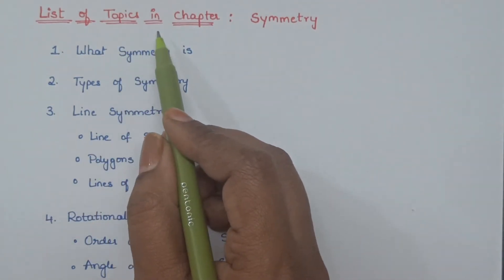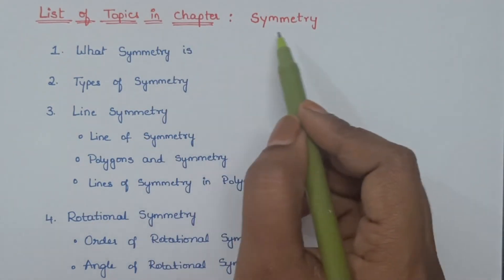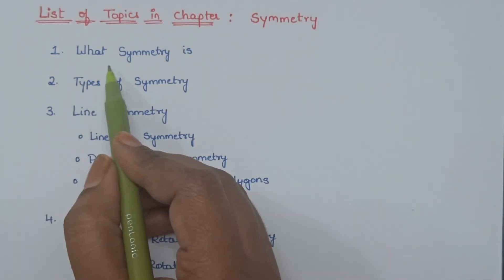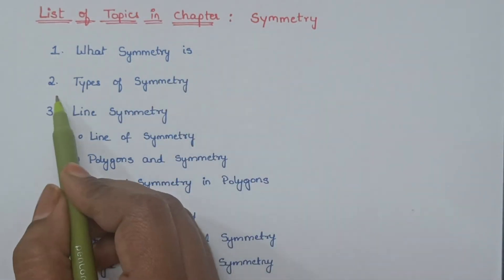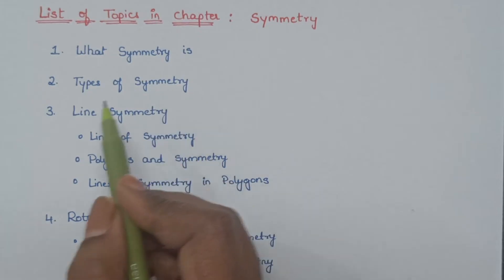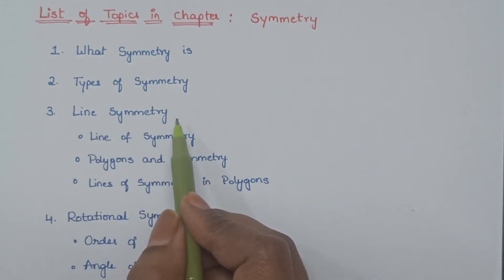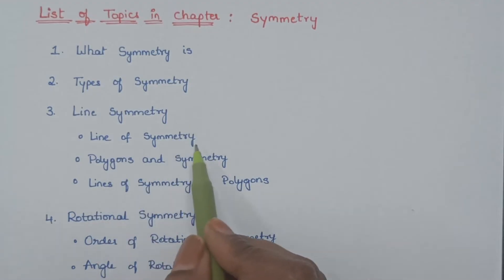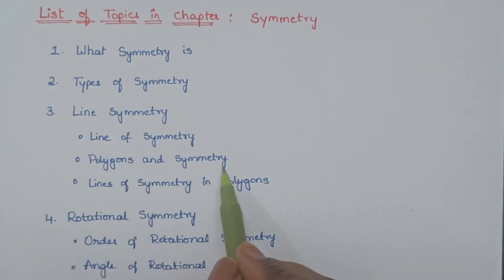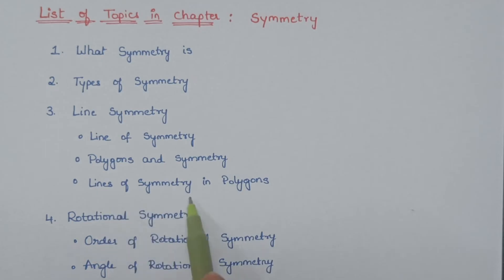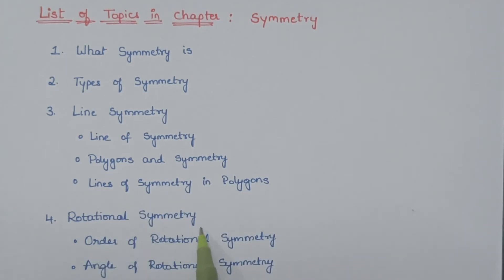Here is a list of topics we are going to cover in the chapter symmetry. First one, what symmetry is. Second one, types of symmetry. Third one, line symmetry. In line symmetry we are going to see line of symmetry, classification of polygons based on symmetry, and lines of symmetry in polygons. Fourth one, rotational symmetry — in rotational symmetry we see order of rotational symmetry and angle of rotational symmetry.